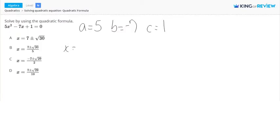So, the quadratic formula says negative b plus or minus square root b squared minus 4ac over 2a.